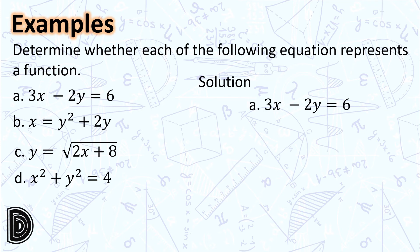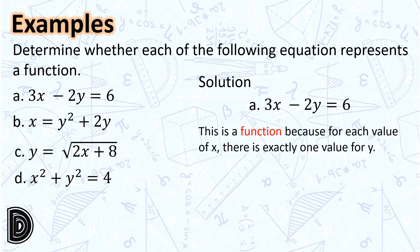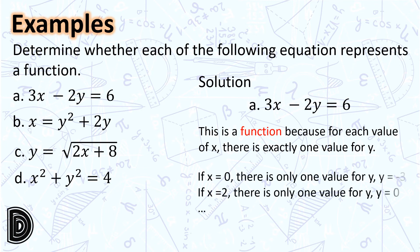Let's start with letter a: 3x − 2y = 6. This is a function because for each value of x, there is exactly one value for y. For example, if x = 0, there is only one value for y which is −3. If x = 2, there is only one value for y that is 0. The values of y are obtained by substituting the values of x in the given relation.